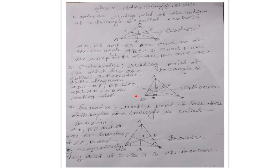So dear students, now you understand what is centroid, what is orthocentre, and what is incentre. Centroid is the meeting point of the medians of a triangle. Orthocentre is the meeting point of the altitudes drawn from the vertex to the opposite side. And incentre is the meeting point of the angle bisectors — where each angle is divided into two equal parts. Most probably the concepts of centroid, orthocentre and incentre are now clear to you.